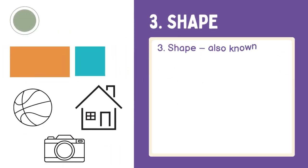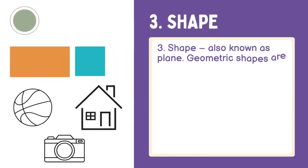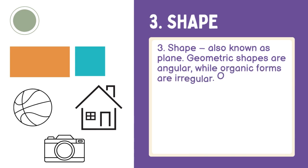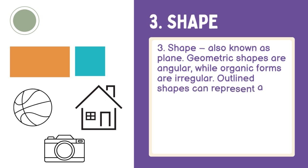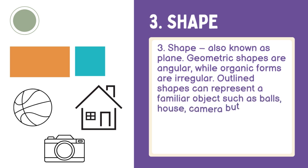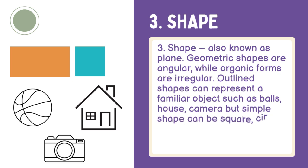Shape, also known as plane: Geometric shapes are angular, while organic forms are irregular. Outlined shapes can represent a familiar object such as balls, house, or camera, but simple shapes can be square, circle, or rectangle.